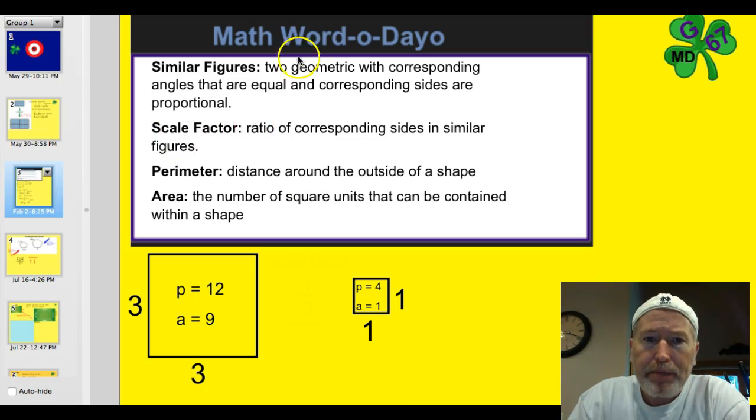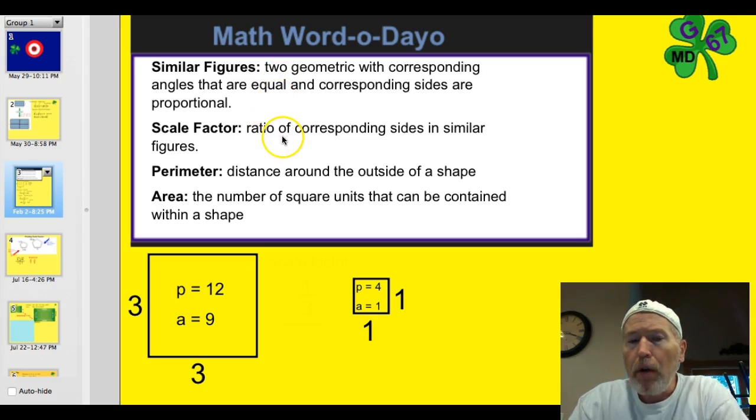Let's take a look at some of the must-know words for tonight. First of all, similar figures. These are two geometric shapes with corresponding angles that are equal and corresponding sides that are proportional. We've been over these things. Scale factor, that's that ratio of corresponding sides in similar figures.